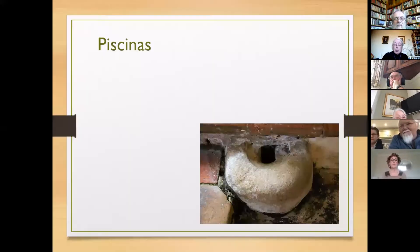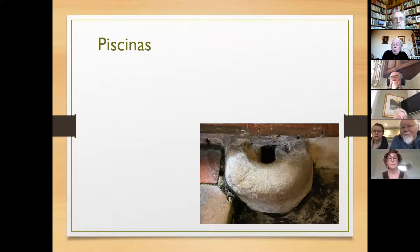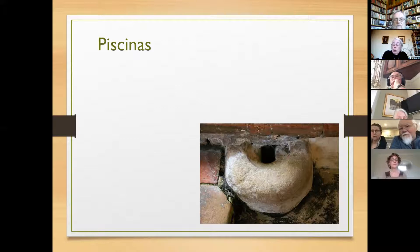We now move on to piscinas. A piscina is essentially a small sink or drain where liquid that has come into contact with the consecrated elements of communion can drain into consecrated ground. Usually these are mounted in the wall to the south of the altar, often with an aumbry or cupboard above it. Floor piscinas are a rare form where the piscina simply takes the form of a hole in the floor, into which the washing-up water can be poured directly at the end of the ablutions.